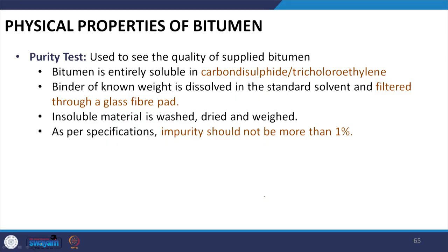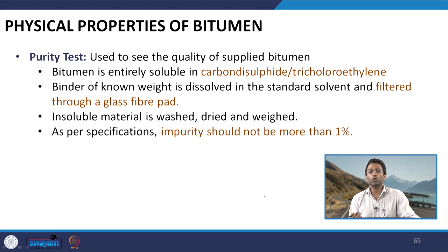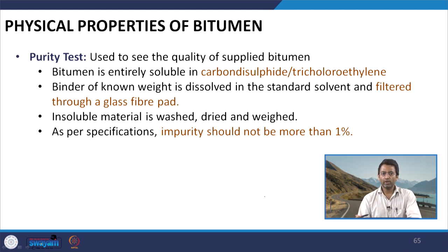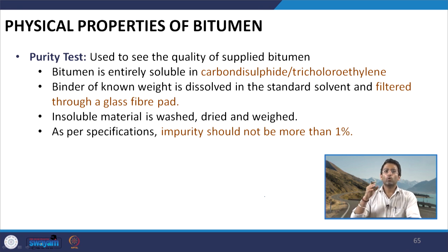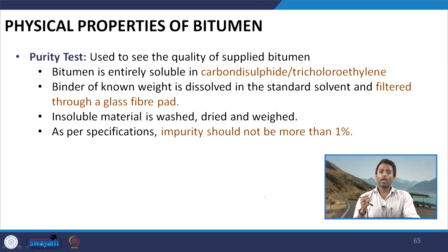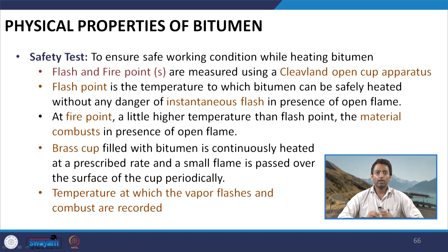The next test is the purity test. It is important that the bitumen used in construction is in its pure form. In a solubility test, bitumen is dissolved in carbon disulfide or trichloroethylene — solvents in which pure bitumen is entirely soluble. The solution is filtered through a glass fiber pad; residue is washed, dried, and weighed. Bitumen must have a purity of at least 99% to be used for paving applications.